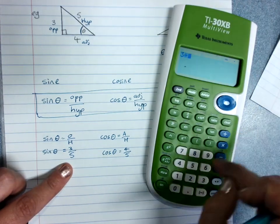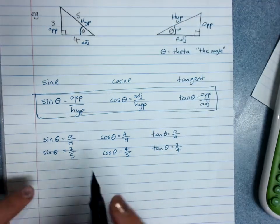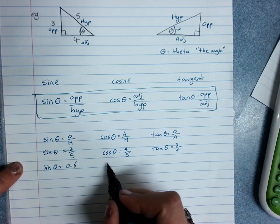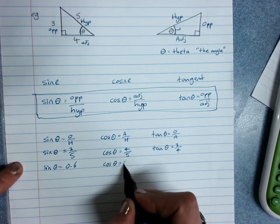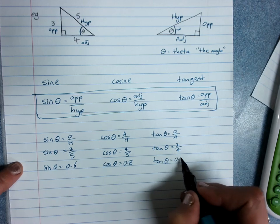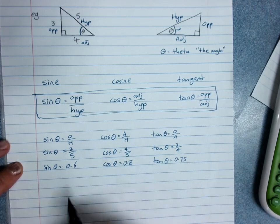So 3 divided by 5, sine of the angle is 0.6. And you'd use your calculator if you needed to.